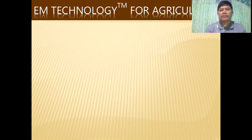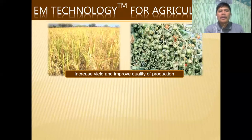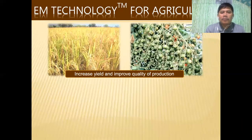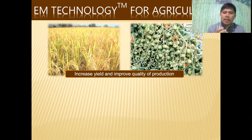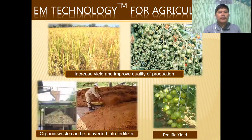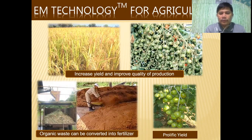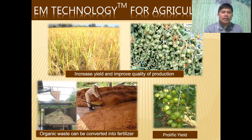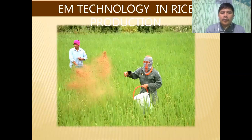Basically, EM is used to increase yield and improve quality of production. If you want to produce vegetables and fruits that have a longer shelf life, EM technology is the technology for you. We also use EM technology to convert organic waste into fertilizer, and it is used to achieve prolific yield as well.